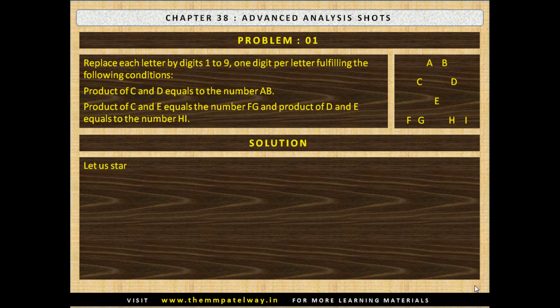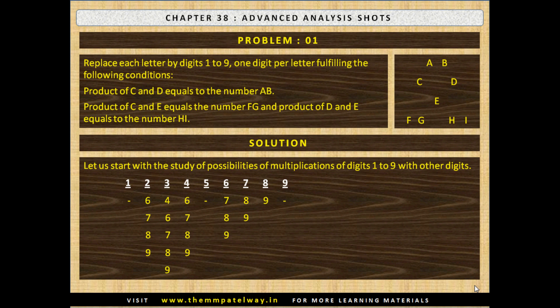Now let us see the solution. Let us start with the study of possibilities of multiplication of digits 1 to 9 with other digits. We should ensure that when we multiply 2 digits we should get a 2 digit result. Naturally 1 cannot be multiplied with any digit. 2 can be multiplied by 6, 7, 8 and 9. 3 can be multiplied by 4, 6, 7, 8 and 9. 5 cannot be multiplied by any digit as it would give resultant either 0 or 5 in unit column. 6 can be multiplied by 7, 8 or 9. 7 can be multiplied by 8 or 9. 8 can be multiplied by 9. Our table of possibility of multiplying 2 digits is ready.